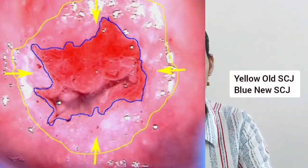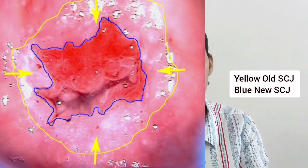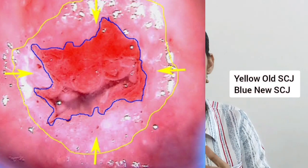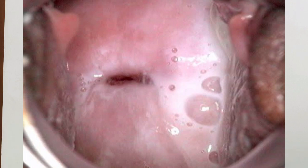For an adequate colposcopy, you need to completely visualize the transformation zone — you must identify both the new squamo-columnar junction and the original squamo-columnar junction. The transformation zone is the area between those two junctions, and the entire zone must be visible for an adequate colposcopy.